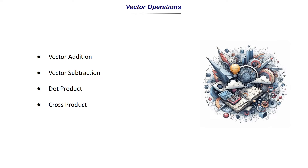These are the four vector operations that we will be discussing today: vector addition, vector subtraction, dot product, and cross product. Let's understand each of these operations individually and also how they are used in deep learning. Apart from these, we also have some other vector operations which will be covered in the subsequent video.